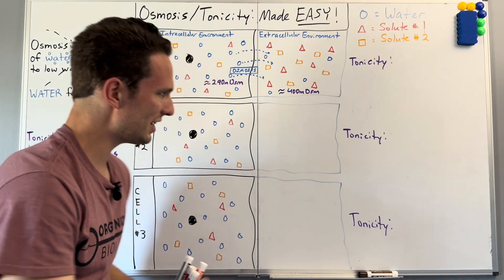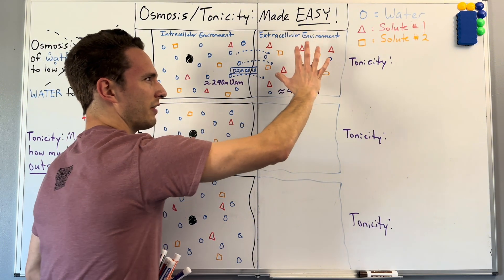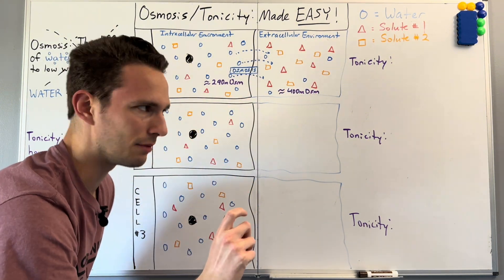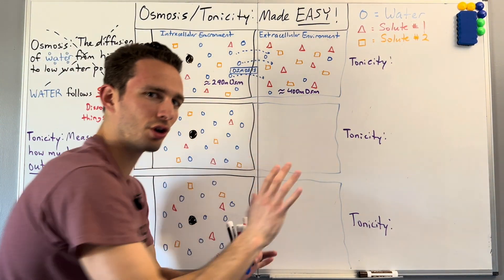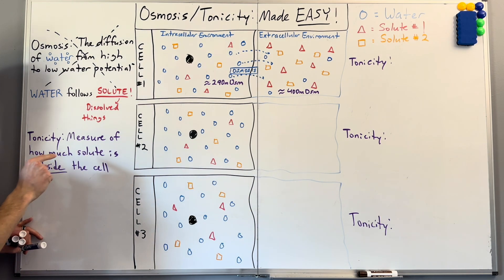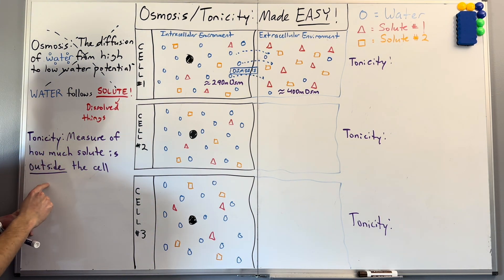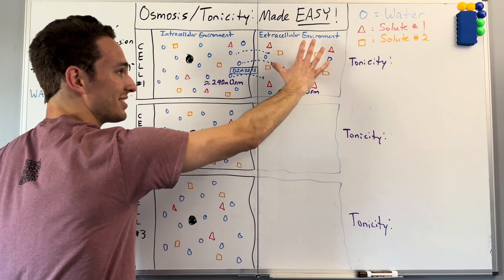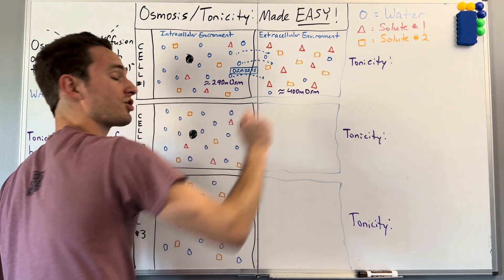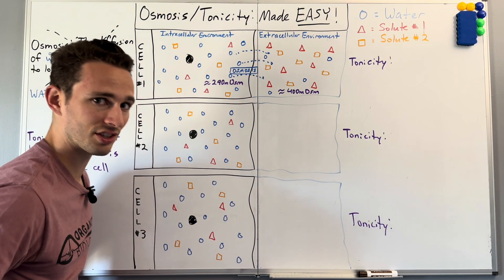So therefore, we can name this extracellular environment a specific name due to its tonicity. Now, tonicity just deals with how much solute is outside of the cell. Key word is outside. So as you can tell with this guy, we have a lot more solute than compared to the inside of the cell.